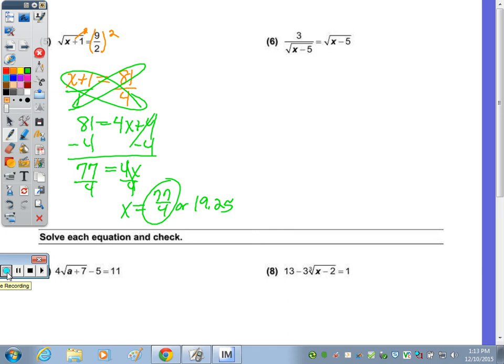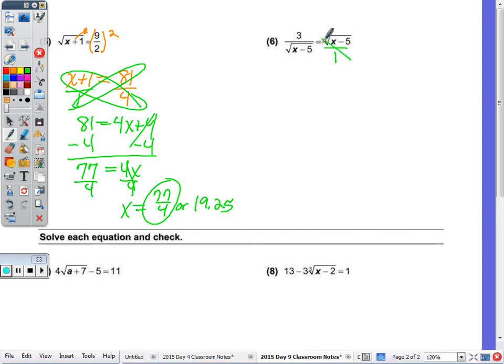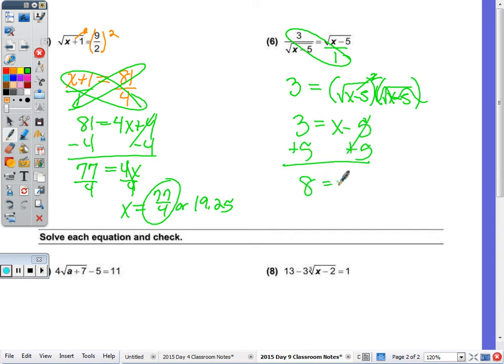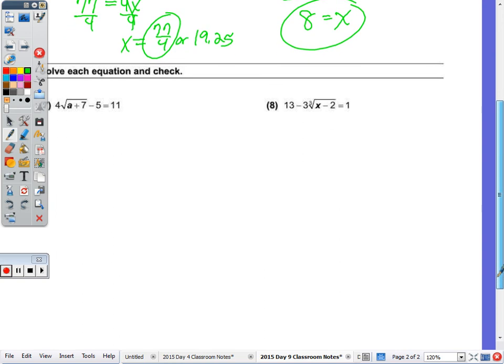And then number 6, 3 over the square root of x minus 5 equals the square root of x minus 5. So let's put it over 1 and cross multiply. So 3 times 1 is 3. And what is the square root of x minus 5 times the square root of x minus 5? x minus 5. Because what you're really doing is squaring it, multiplying it by itself. So it undoes the symbol. So I have 3 equal to x minus 5. Add the 5. And we get 8 equals x. Give it a quick check. You tell me, does it check? And we'll move on to checking by hand in 7 and 8.